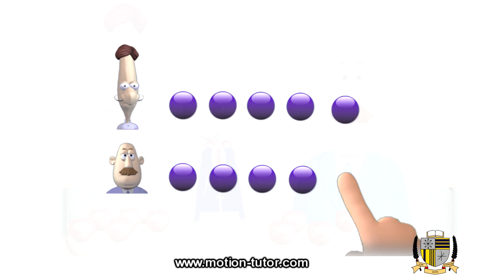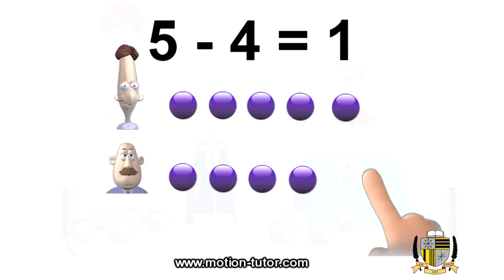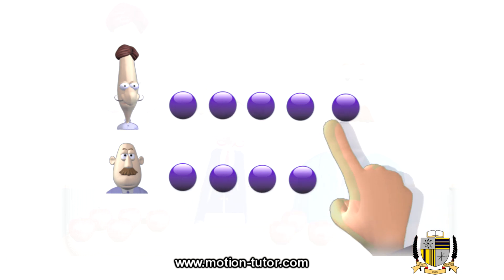So the difference between these two guys' apples is one. Five minus four is one. That's the difference between these two. Barry has one fewer. Jerry has one more.